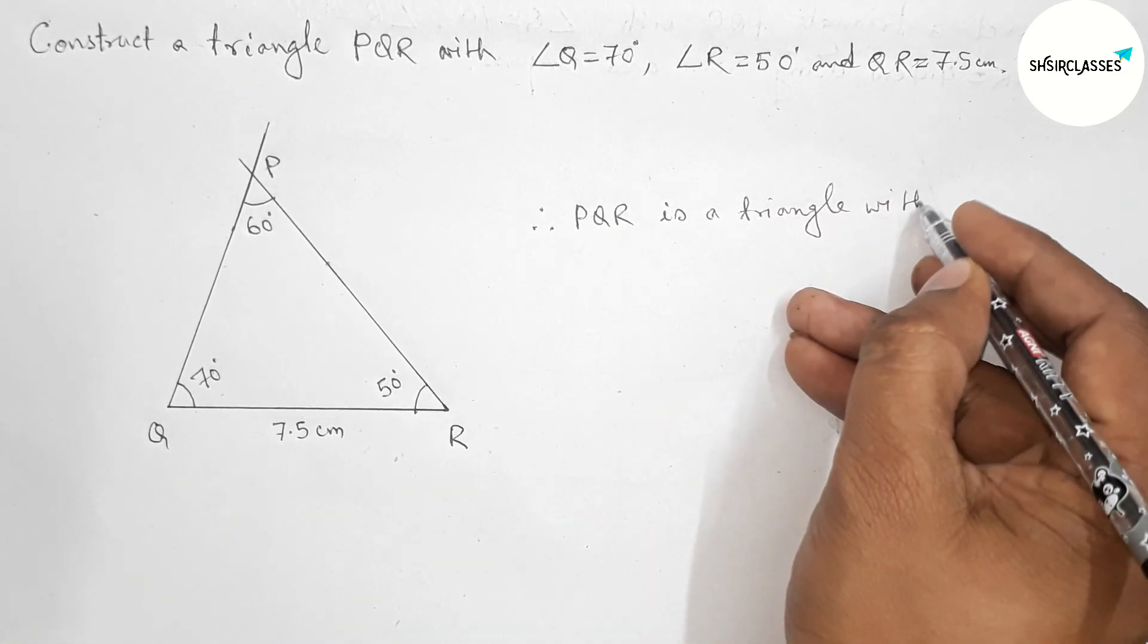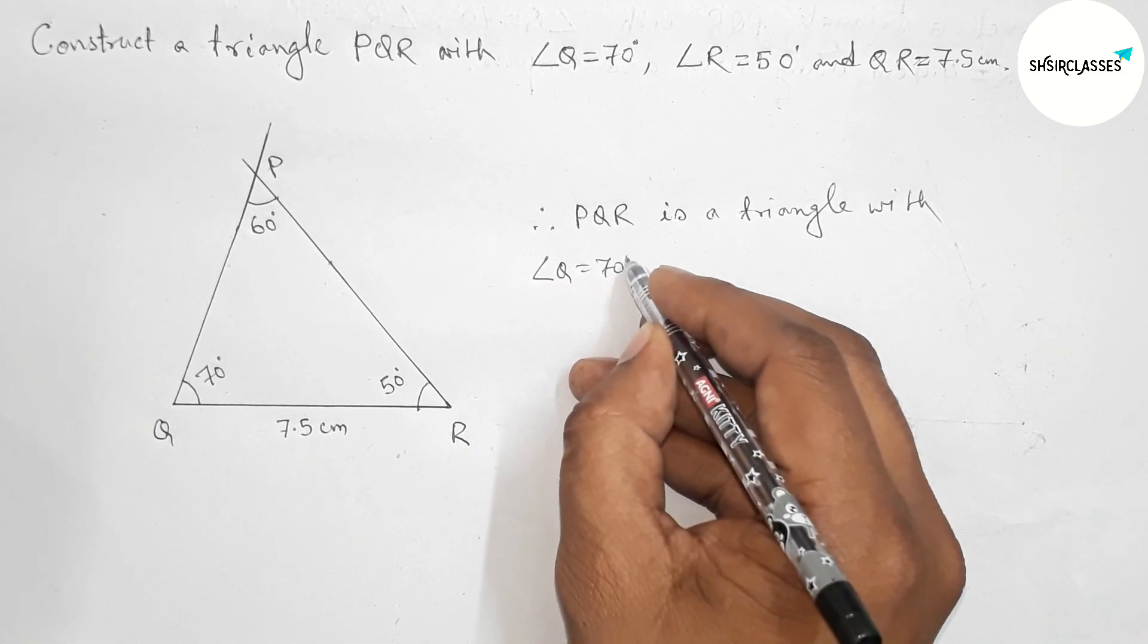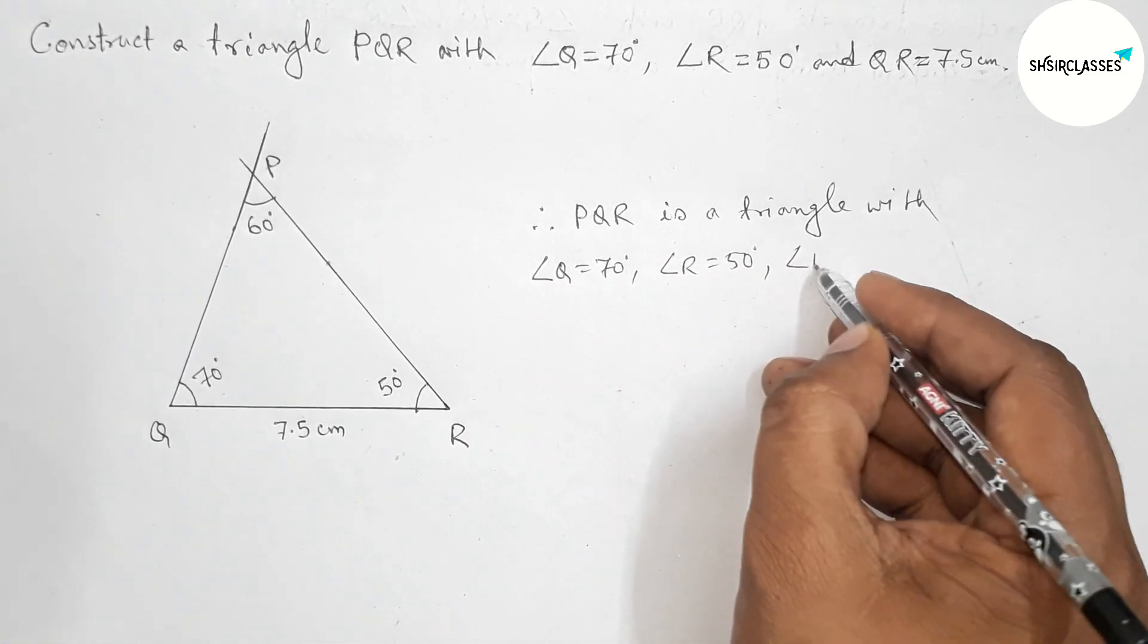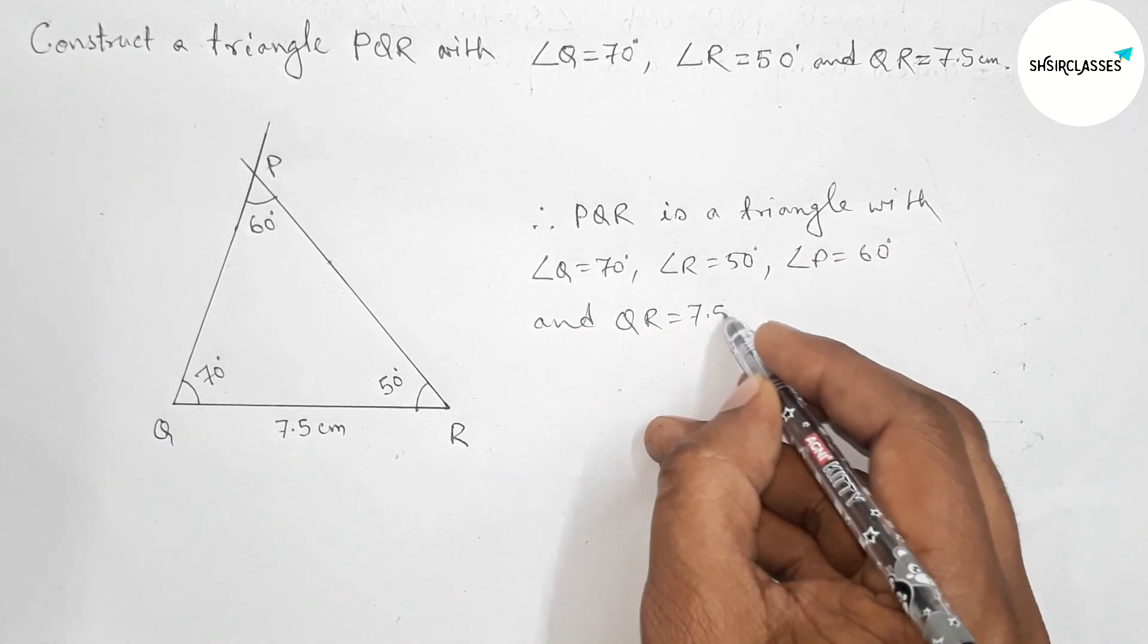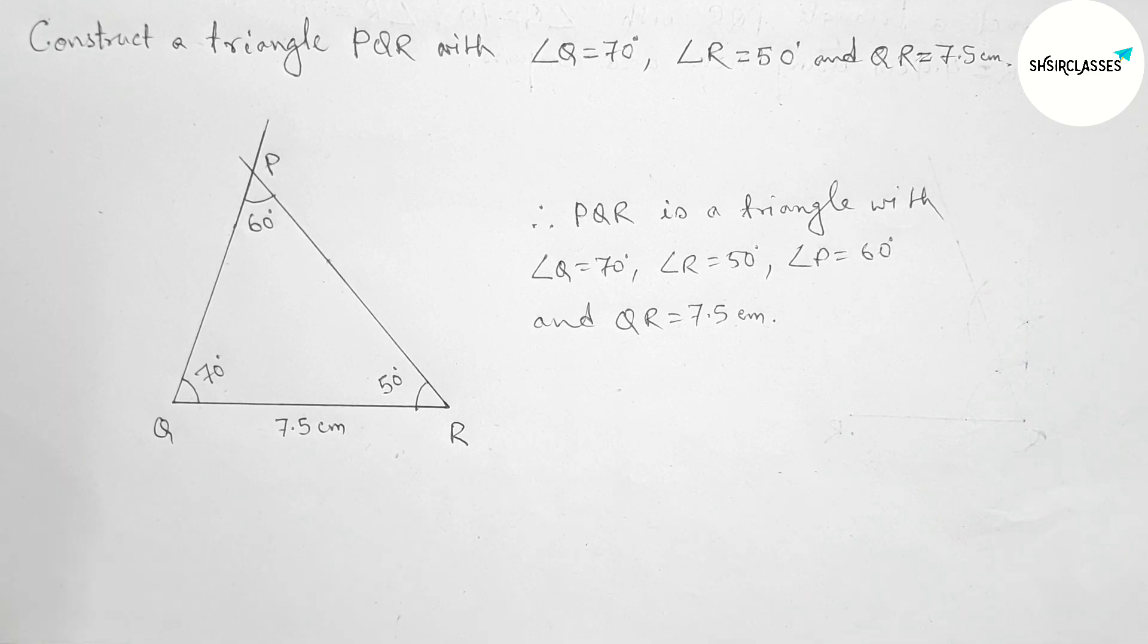is a triangle with angle Q = 70°, angle R = 50°, angle P = 60°, and QR = 7.5 centimeters. So that's all, thanks for watching!